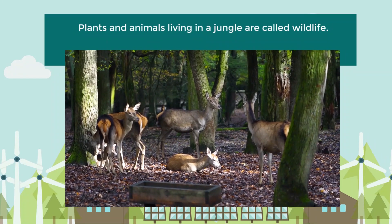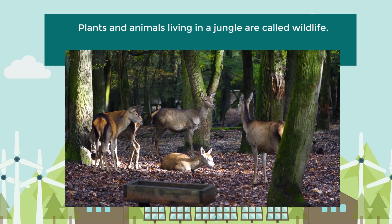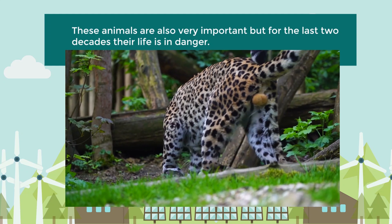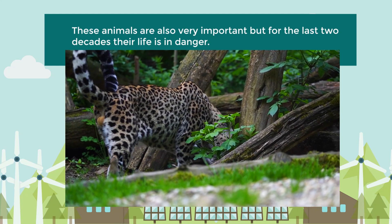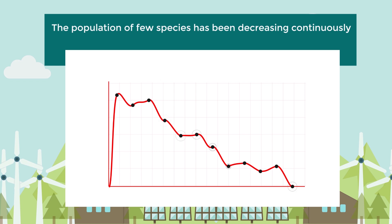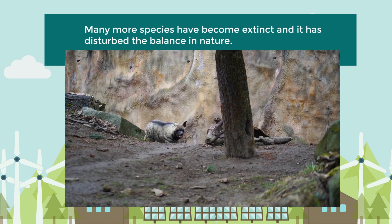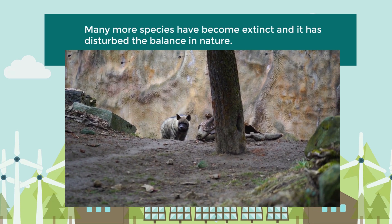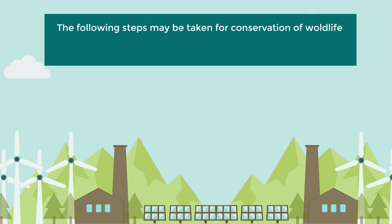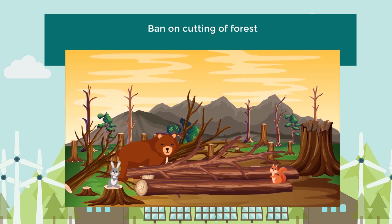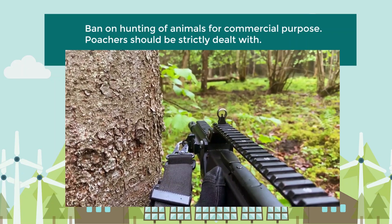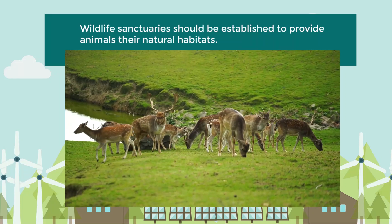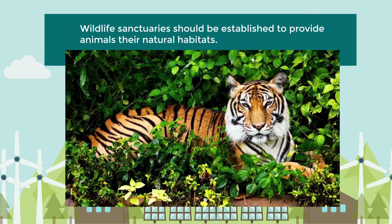Wildlife conservation. Plants and animals living in the jungle are called wildlife. These animals are very important, but for the last two decades their life is in danger. The population of a few species has been decreasing continuously, many species have become extinct, and this has disturbed the balance in nature. Steps for conservation include: ban on cutting of forests, ban on hunting of animals for commercial purposes, poachers should be strictly dealt with, and wildlife sanctuaries should be established to provide animals their natural habitats.